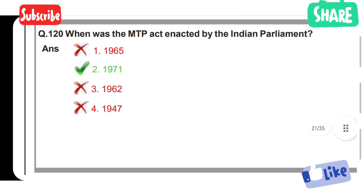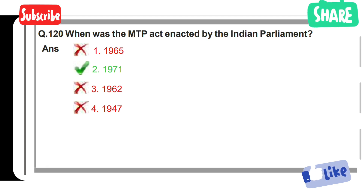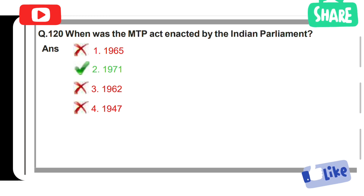When was the MTP Act enacted by the Indian Parliament? Option 1: 1965. Option 2: 1971. Option 3: 1962. Option 4: 1947. Option 2 is the correct answer — 1971.